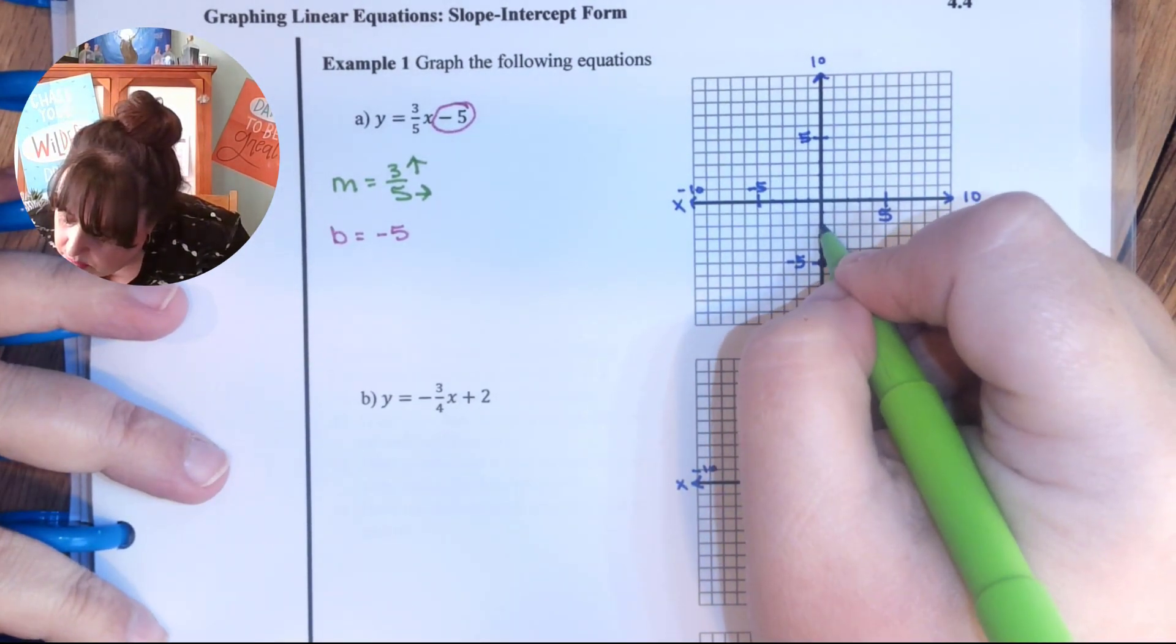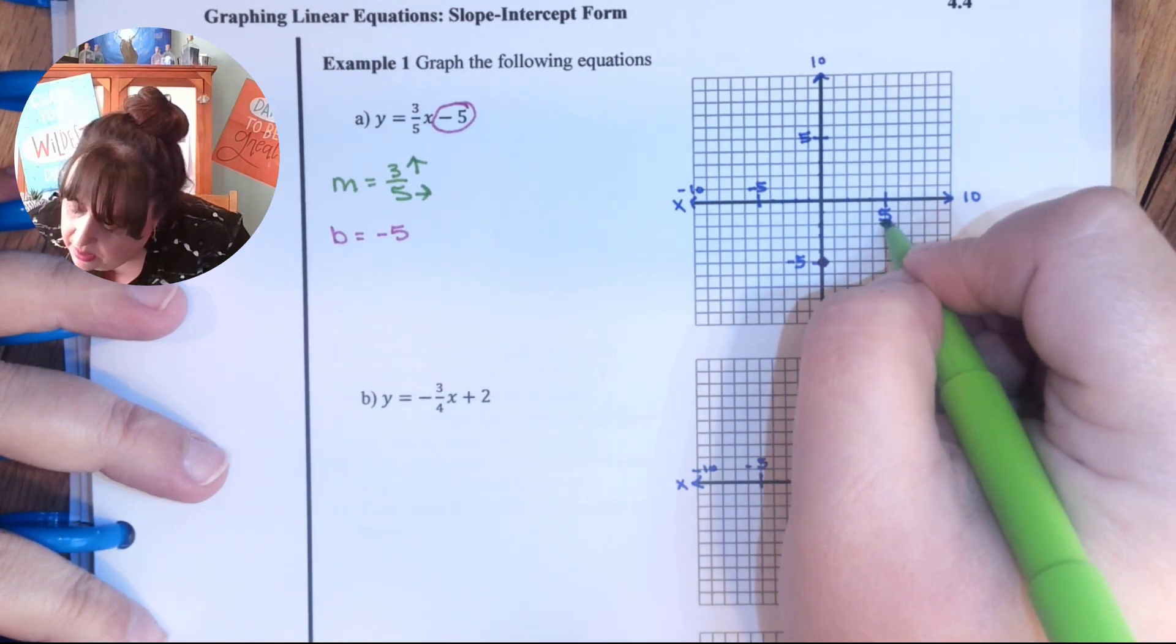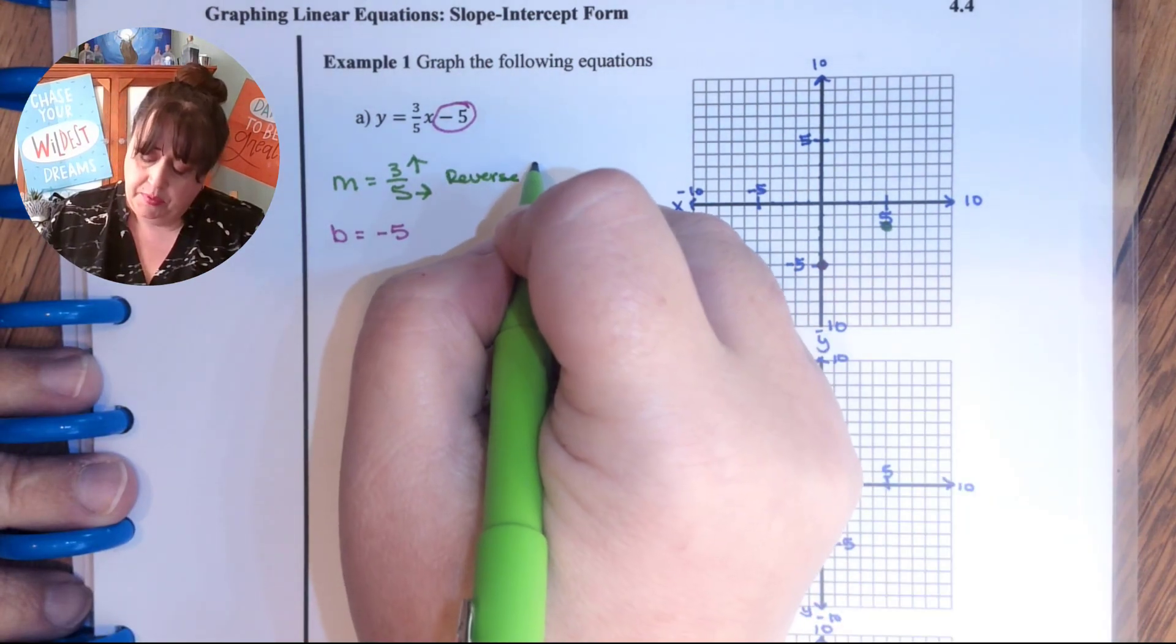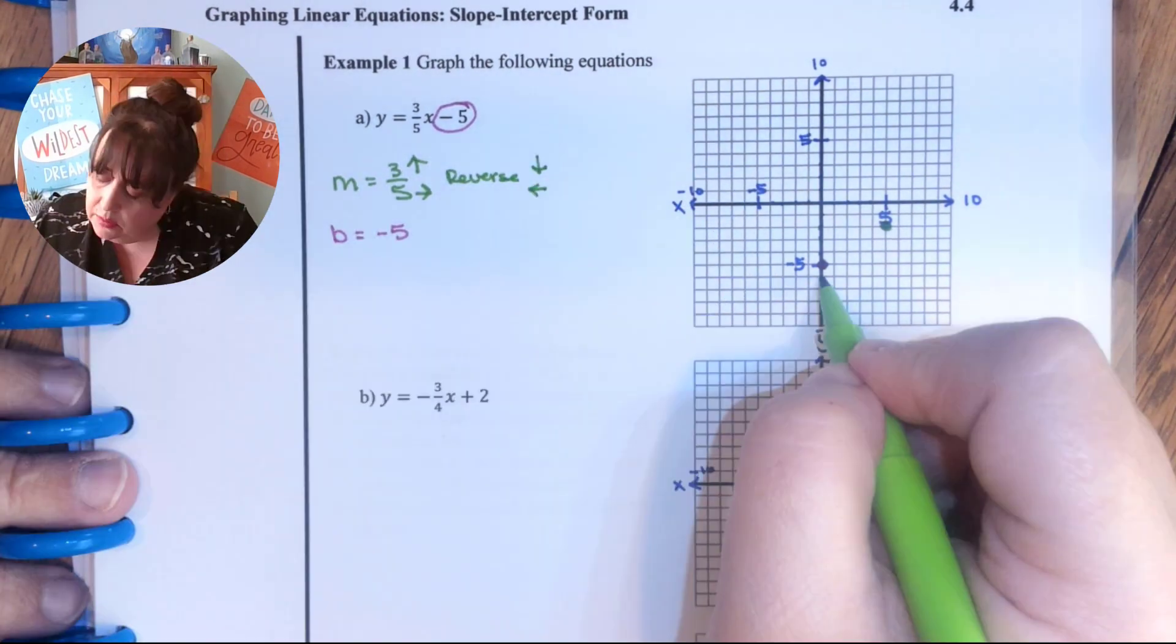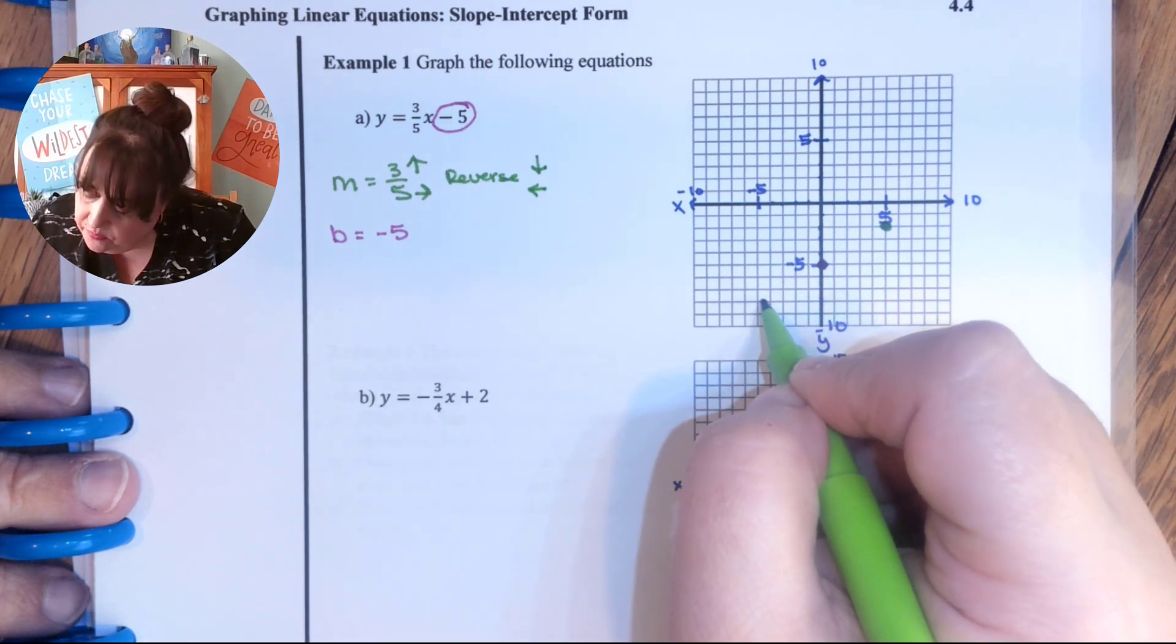So 1, 2, 3 and then over 5. 1, 2, 3, 4, 5. I put a dot. I can do more if I want to. I can reverse it if I want to. So if I want to reverse it would be down and left. 1, 2, 3, 1, 2, 3, 4, 5.